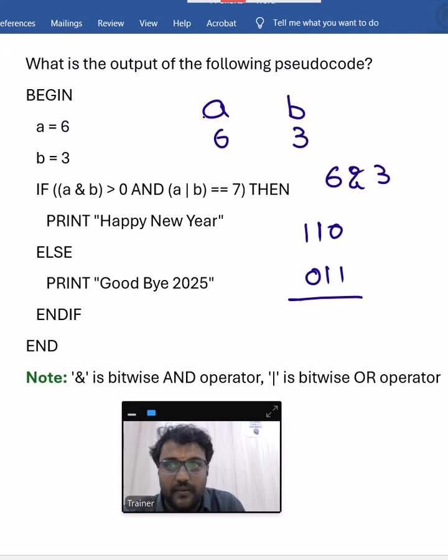Now AND operation. When both are 1 then only it results to 1. So we have 1 1. When you operate it is 1 only. 1 0 is 0. 0 1 is 0. This in terms of decimal is nothing but equal to 2. When you do AND operation for 6 and 3, it results to 2. Number 2.